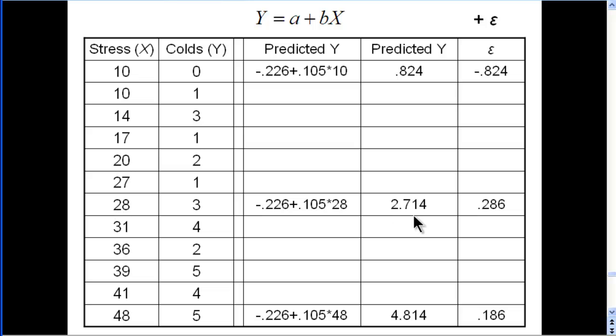Which gives us a value, a predicted Y value, i.e. colds, 2.7 colds for this person. They really actually experienced 3, and so the residual, 3 minus 2.714, equals 0.286. It was nearly perfect prediction, but not quite.